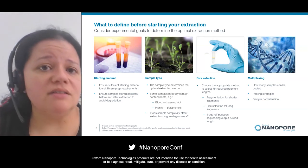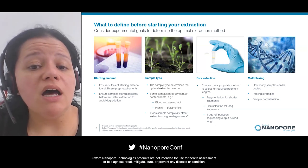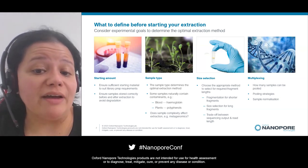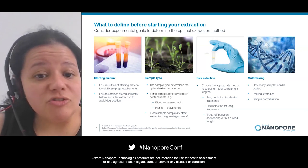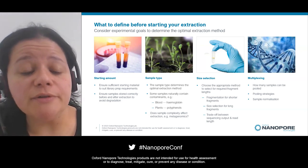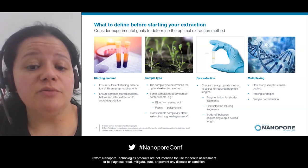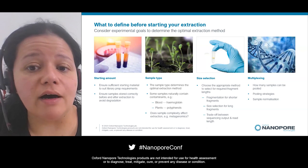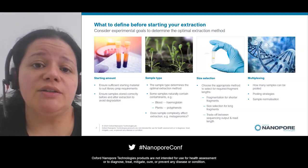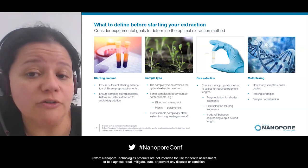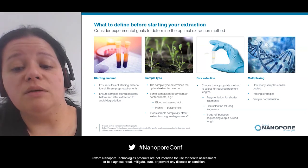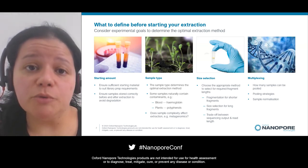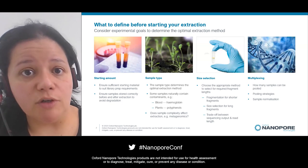Once you have your extract, there is some post-extraction processing you can do, like size selection — you might want to fragment your sample to generate shorter fragments, or size select to deplete shorter material and generate longer fragments. There is a trade-off between sequencing output and read length. Finally, consider whether you want to multiplex your samples — multiplexing kits tend to have lower input amounts, which may be beneficial if you have less material.